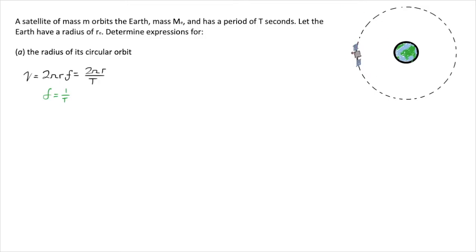Let's look at a free body diagram of the satellite and consider all the forces acting on it. We have a gravitational force, which I'll call FG. That's probably going to be it — in an orbital situation, what keeps you in circular motion is the gravitational force. That being the only force, I can say the net force equals the force of gravity.